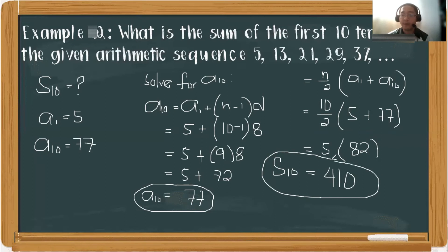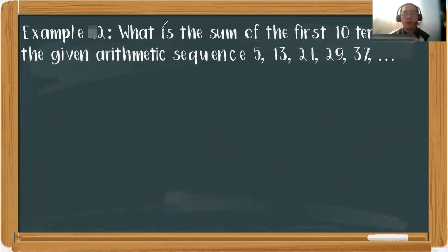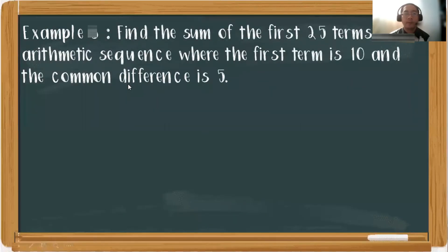So therefore, the sum of the first 10 terms of the given arithmetic sequence 5, 13, 21, 29, 37, and so on is 410. Now let's proceed to another example, which is example number 3.